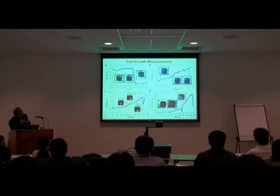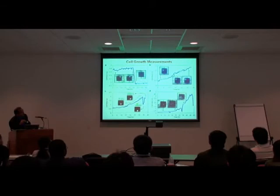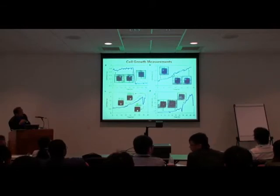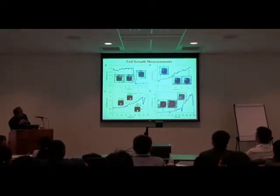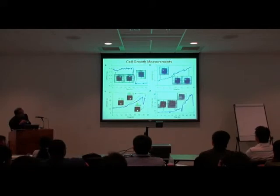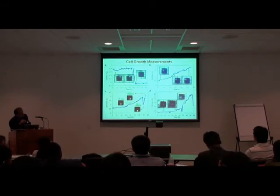Here you see cells just growing — it fitted more like a linear curve in this case, but you can clearly see the cell getting bigger. The cell divided, it grew, and then this peak downward is where the cell divides.